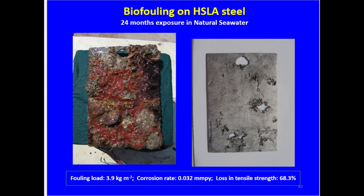Barnacles, oysters, and other secondary foulers such as molluscs, bryozoans, and ascidians are present. After scraping the biomass, you can see severe crevices beneath the washers and hard foulers such as barnacles and oysters. The fouling load on the material is 3.9 kg per square meter. The corrosion rate is very low at 0.032 mm per year.